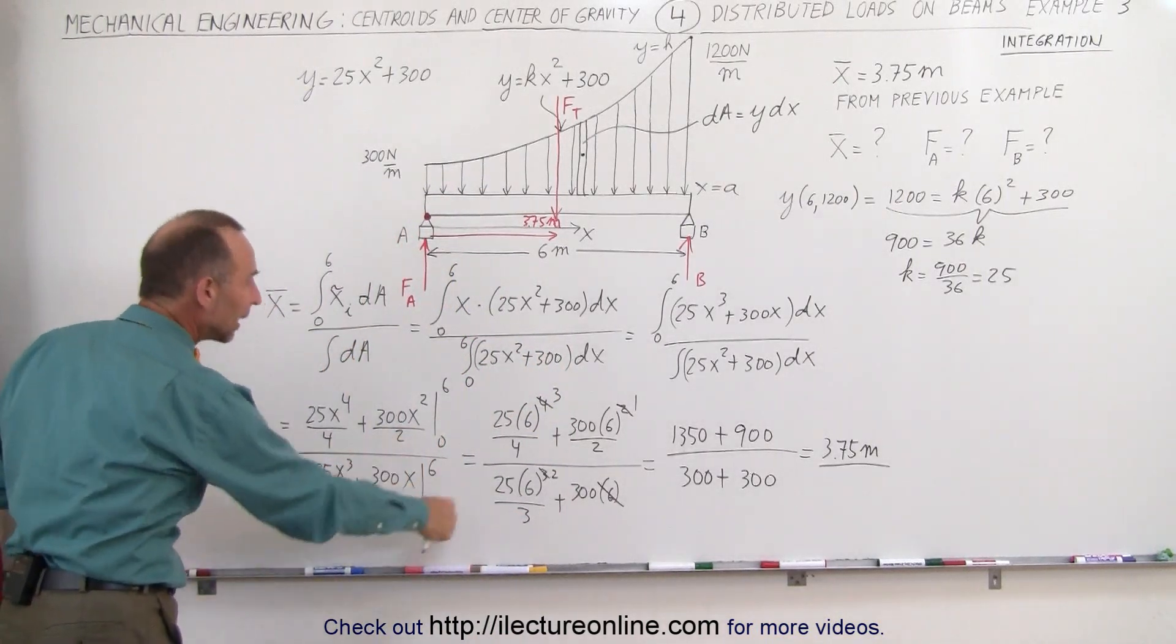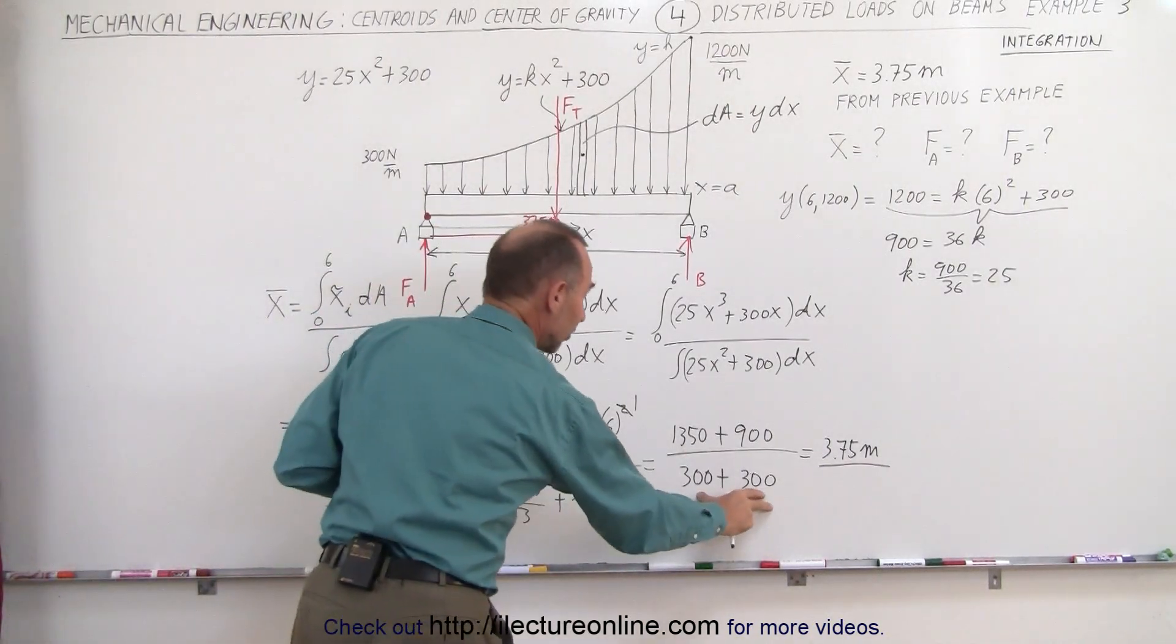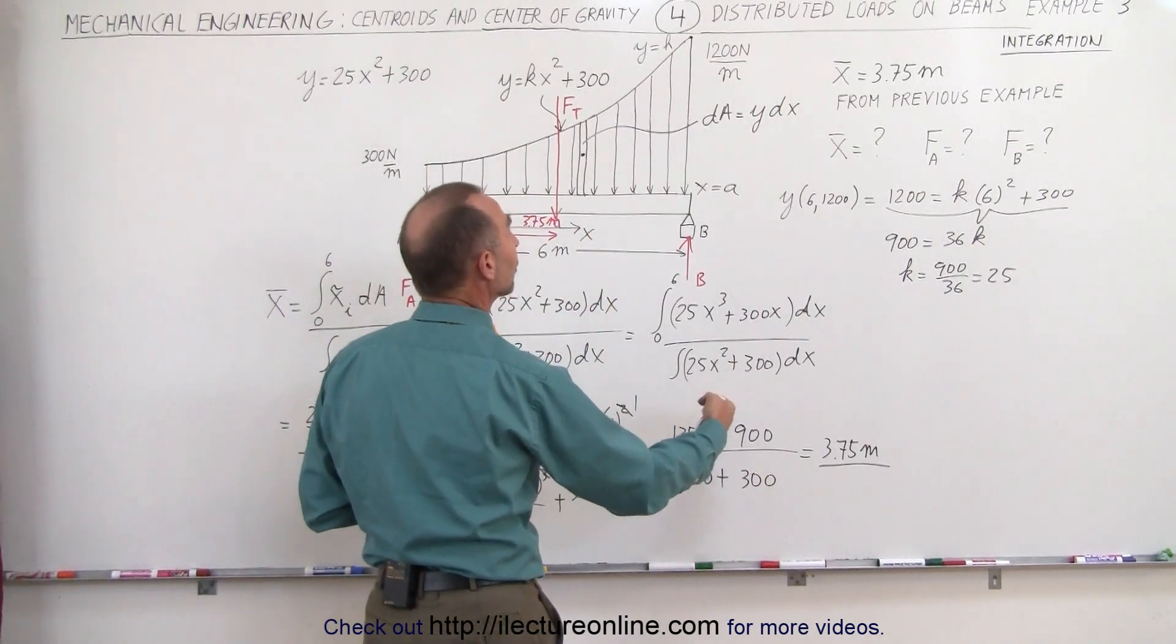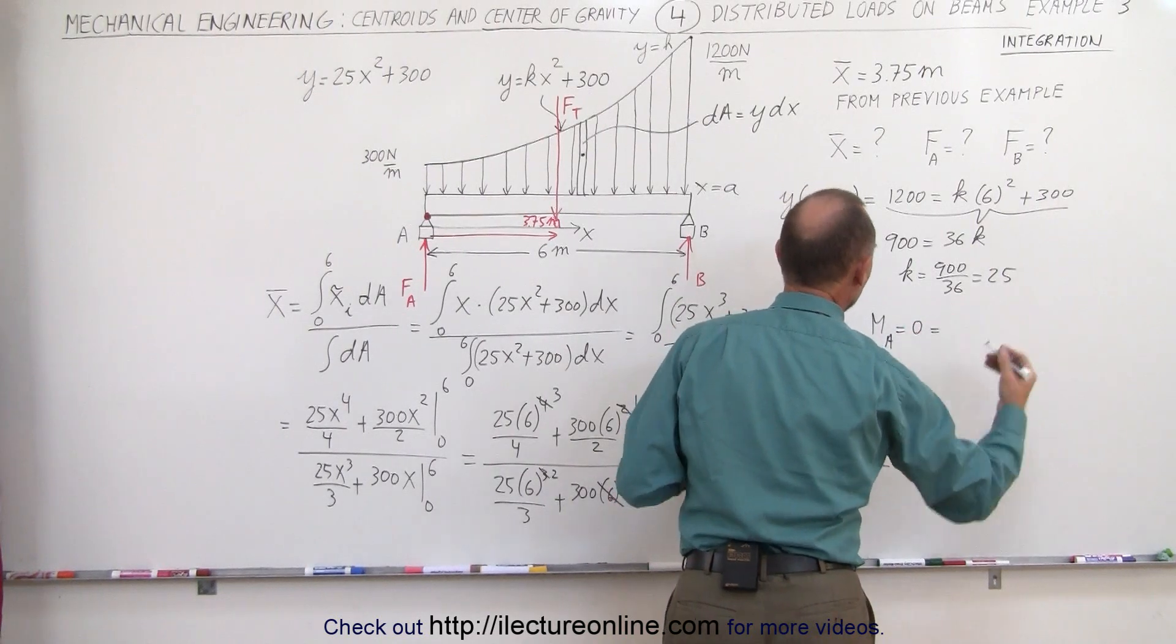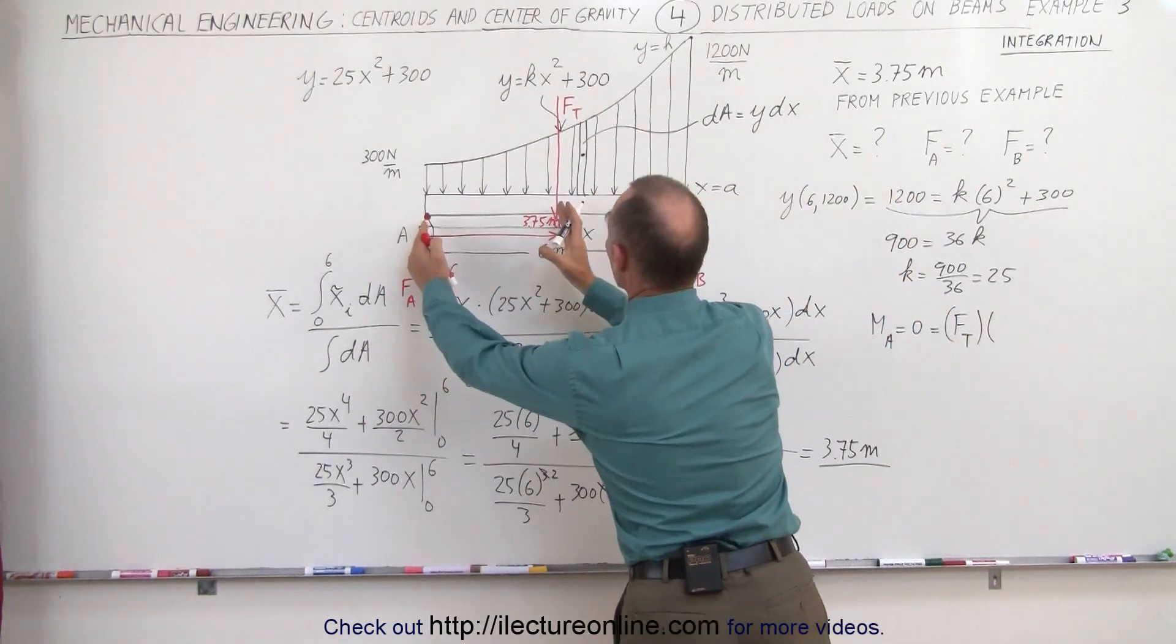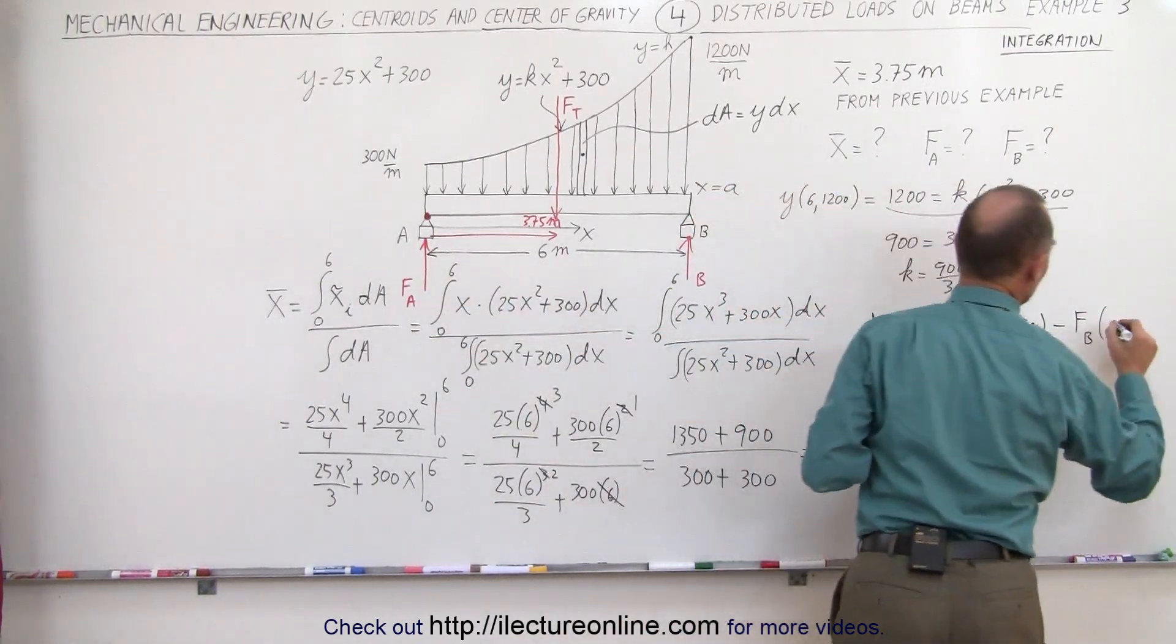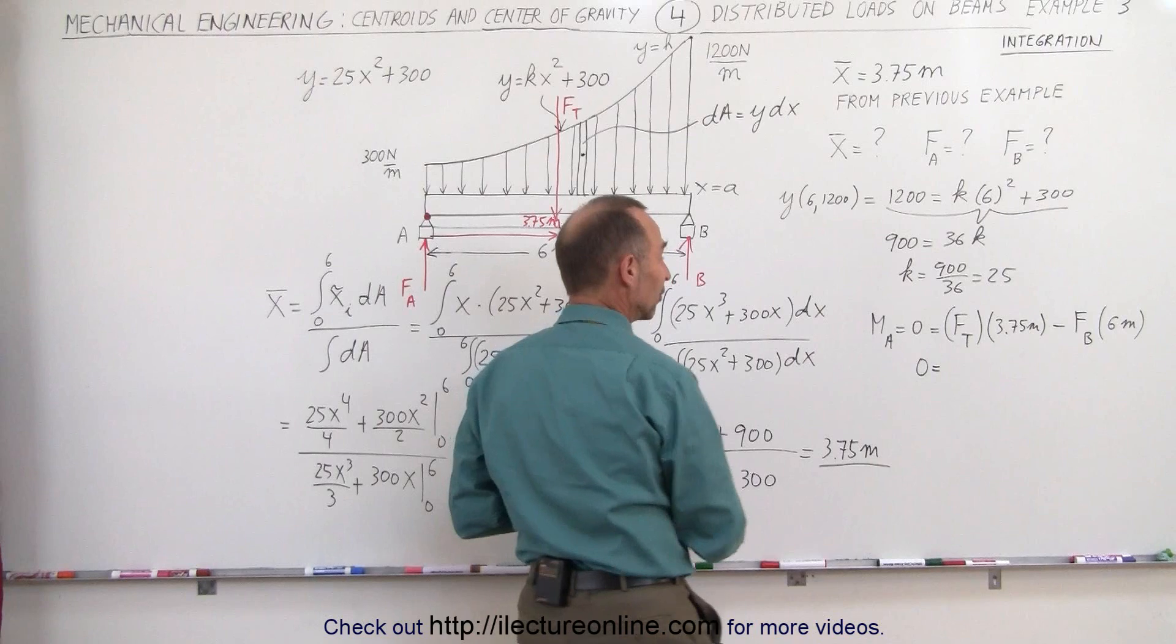F total would be the denominator of this integral because that's what we did here. We integrated over the entire area. The area represents the total force which then would be 600 times 6. Remember that we divided both the numerator and denominator by 6, so we take the denominator and multiply it by 6 again. That gives us the total area or the total force on the beam. The moments about point A equals zero because everything is a static situation. So we have the total force F total multiplied times the x-coordinate of the moment 3.75 meters minus the force caused at B multiplied times the moment arm of 6 meters.